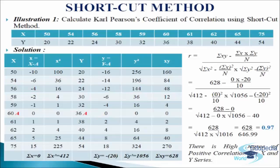Now we will write the formula: r equals to sigma xy minus sigma x into sigma y divided by n, all divided by under root sigma x square minus sigma x square divided by n, into under root sigma y square minus sigma y square divided by n. We will put in the values from the table and calculate. After calculation we will get r equals to 0.97, so there is a high degree of positive correlation between series x and series y.